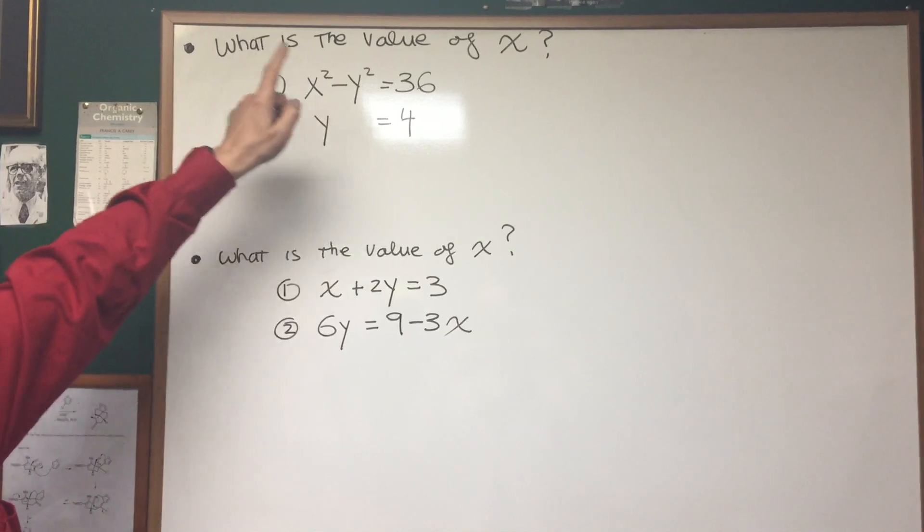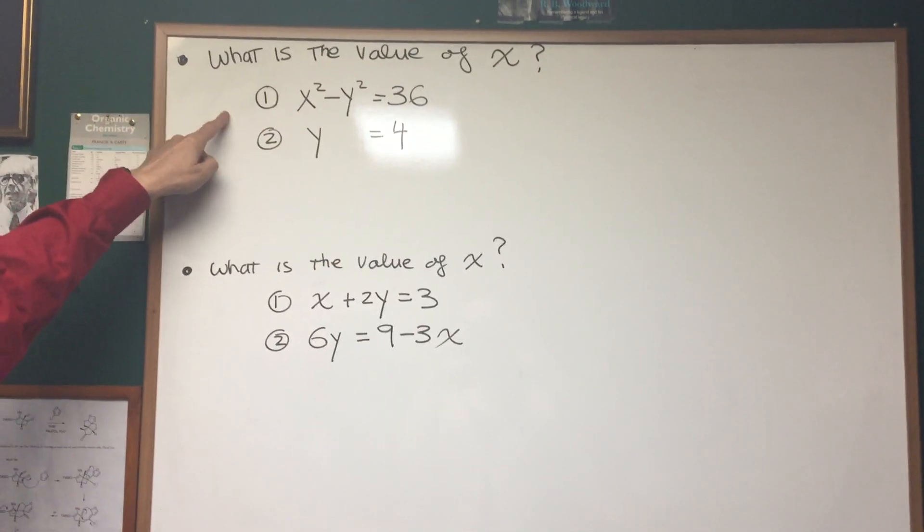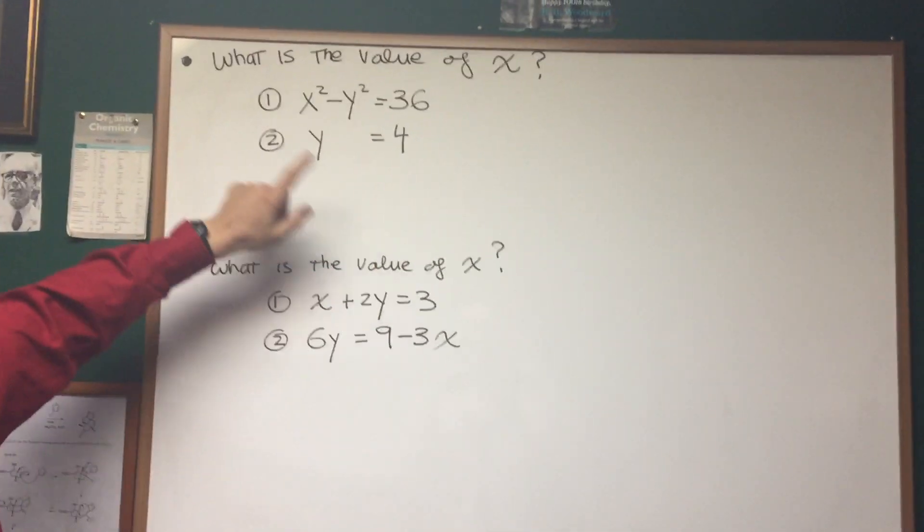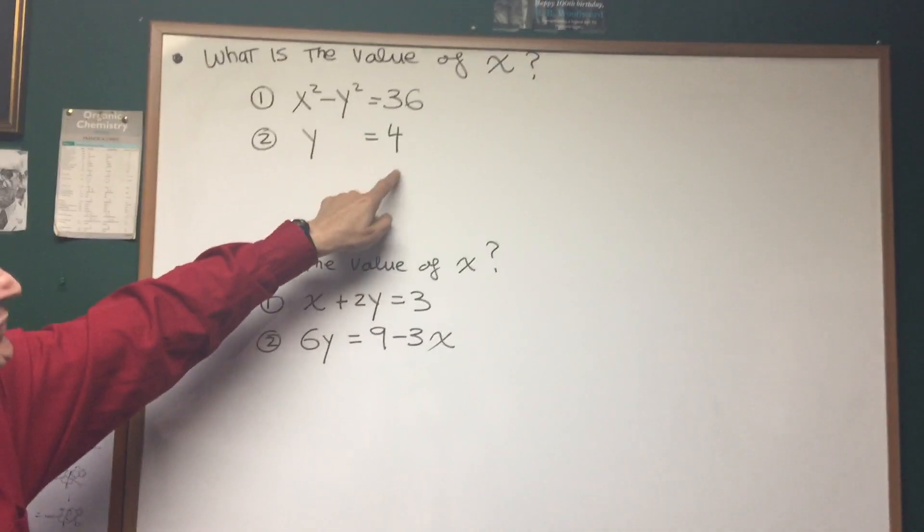Let's just take a look at this first problem. Here's the question: What is the value of x? Statement 1: x squared minus y squared equals 36, a hyperbola. Statement 2: y equals 4.